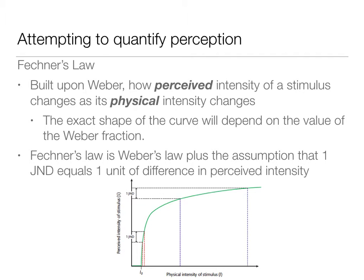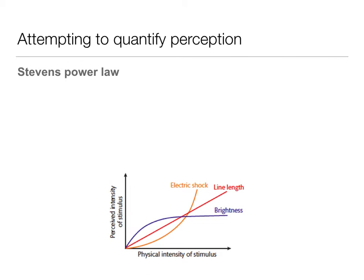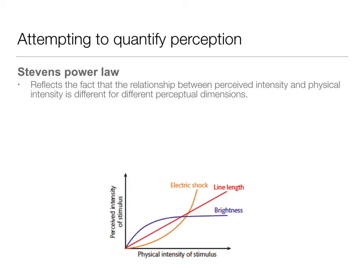Next we go to Stevens' Power Law, and he said none of this is working. He argued that the theories only work for some modes of perception — they don't really do all of them. We don't always have that nice sharp curve that then flattens out. Stevens' Power Law reflects the fact that the relationship between perceived intensity and physical intensity is different for different perceptual dimensions.